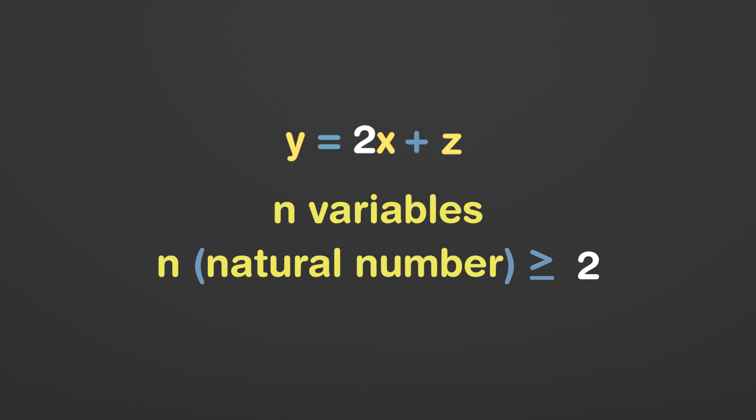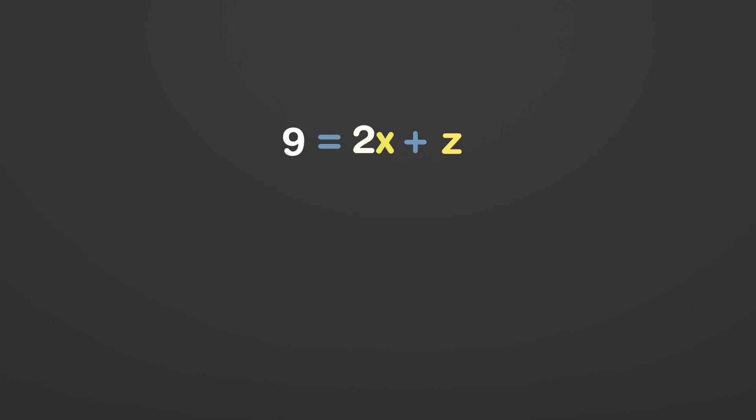But here comes an important question. Can we call an equation with one variable as a function? Let's see with an example. 9 equals 2x plus 1. For this equation to exist, the x value must fix to 9 minus 1 by 2, that is 4.